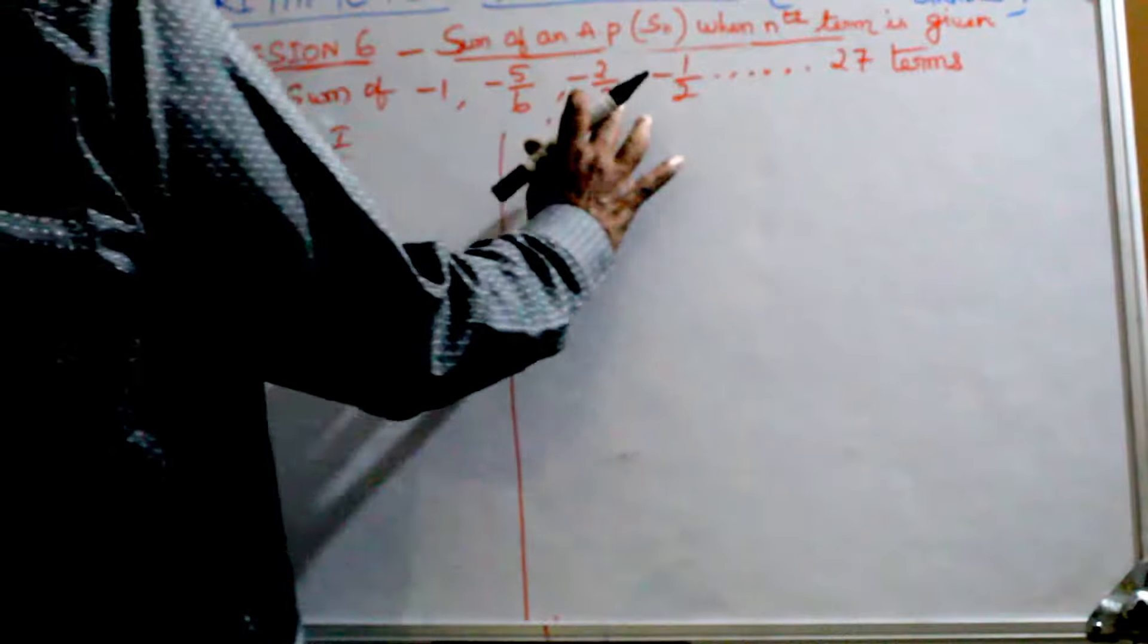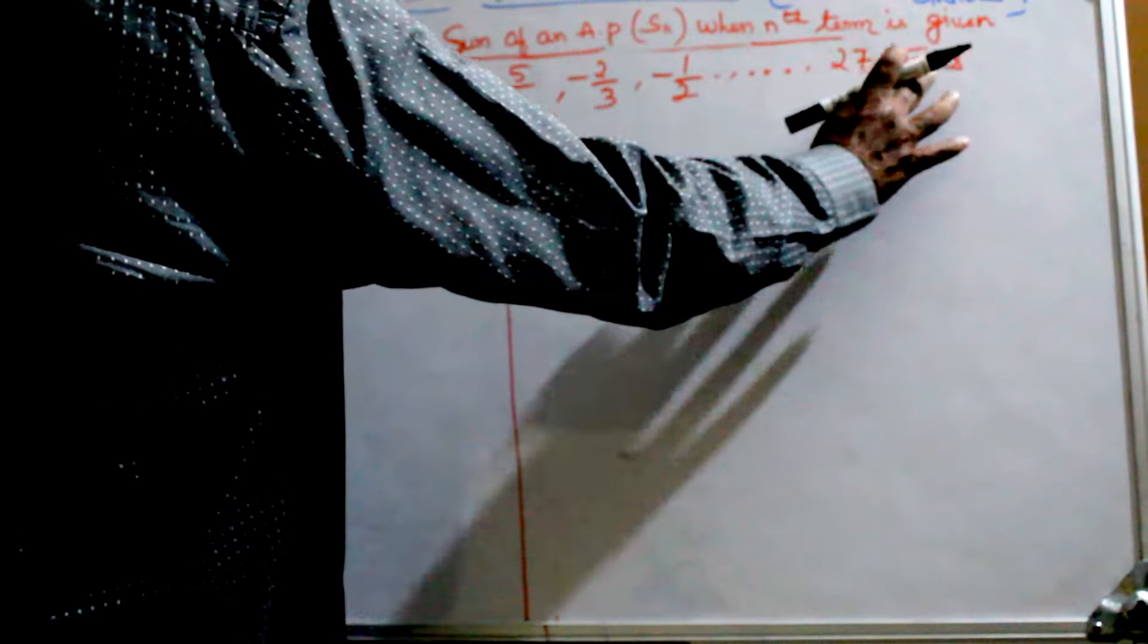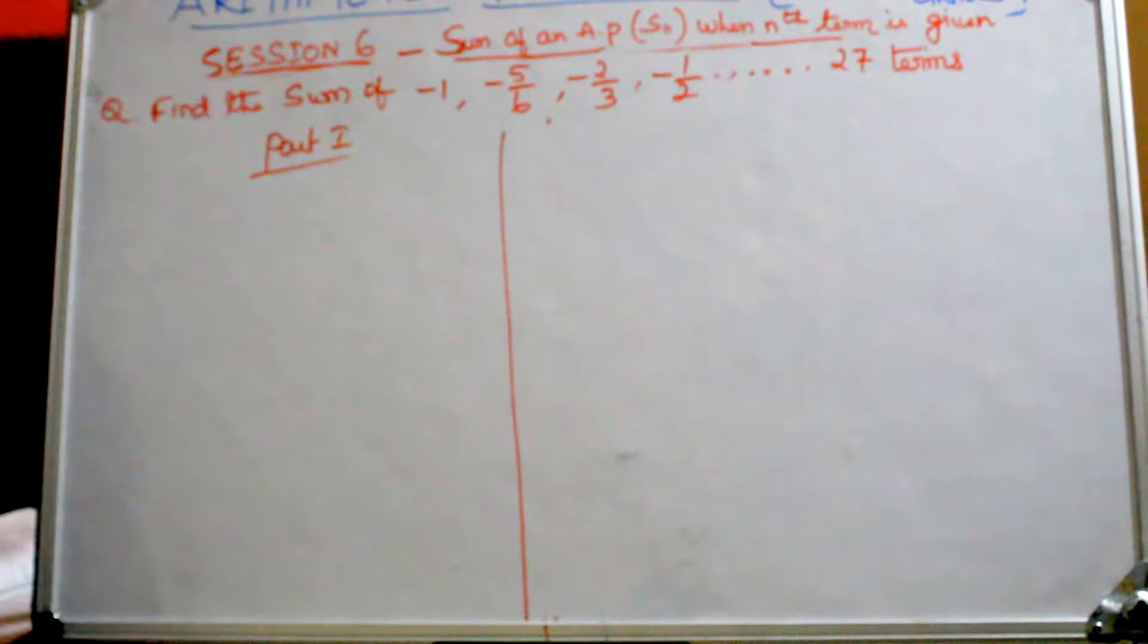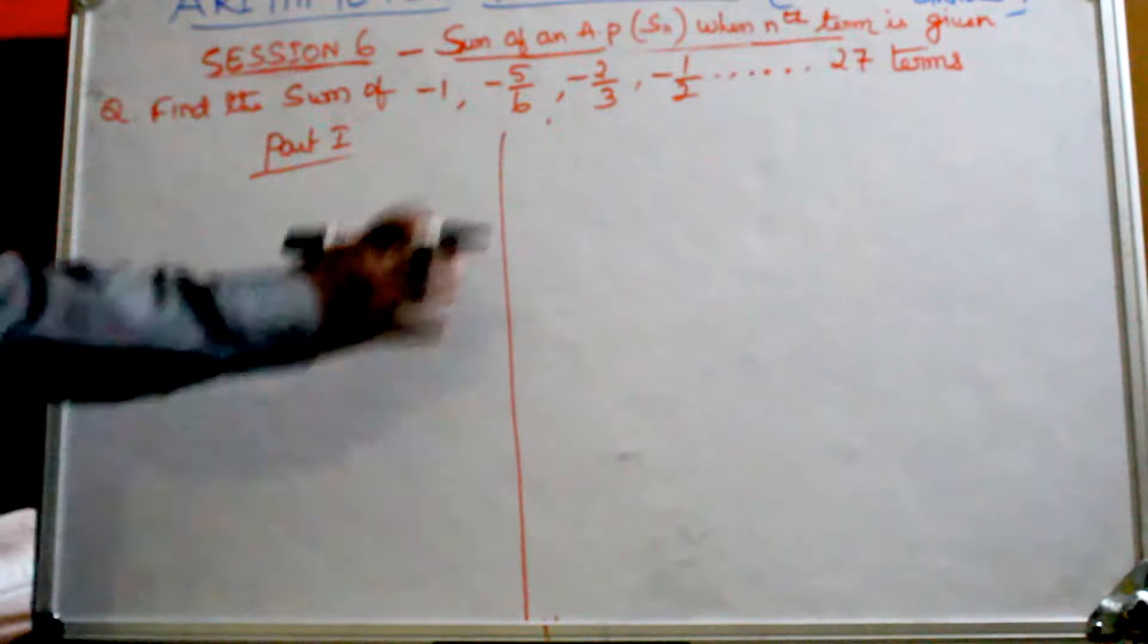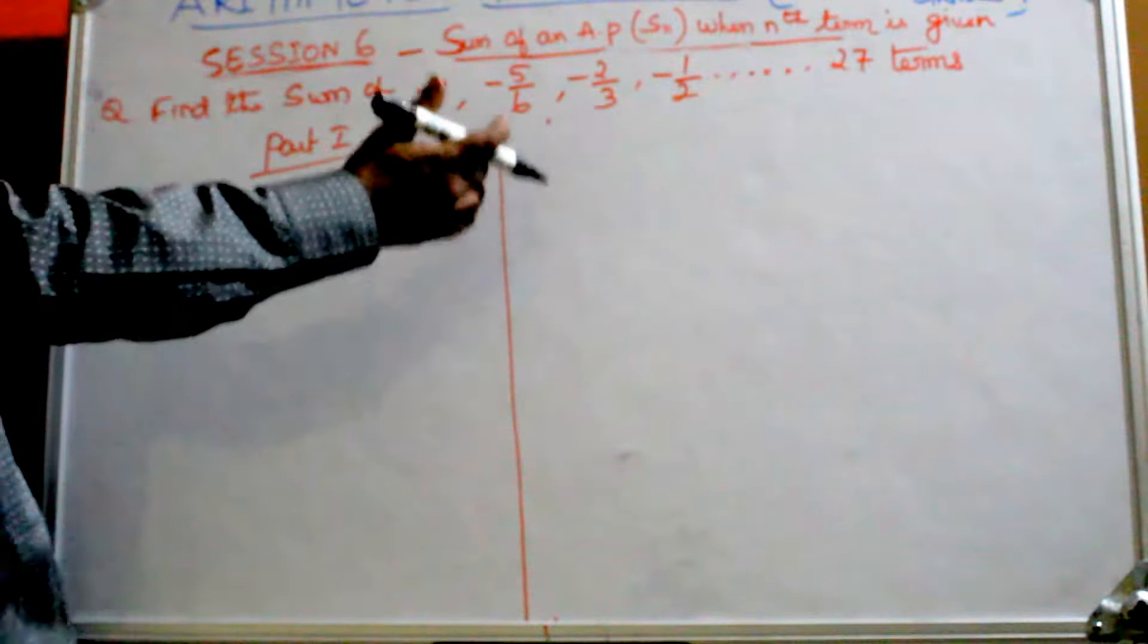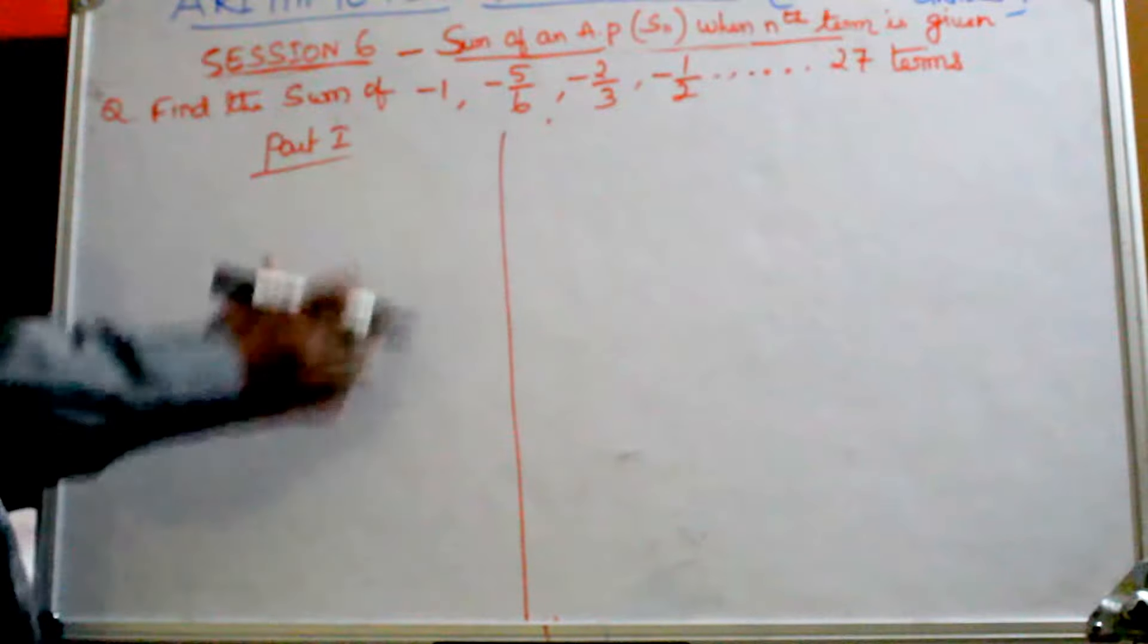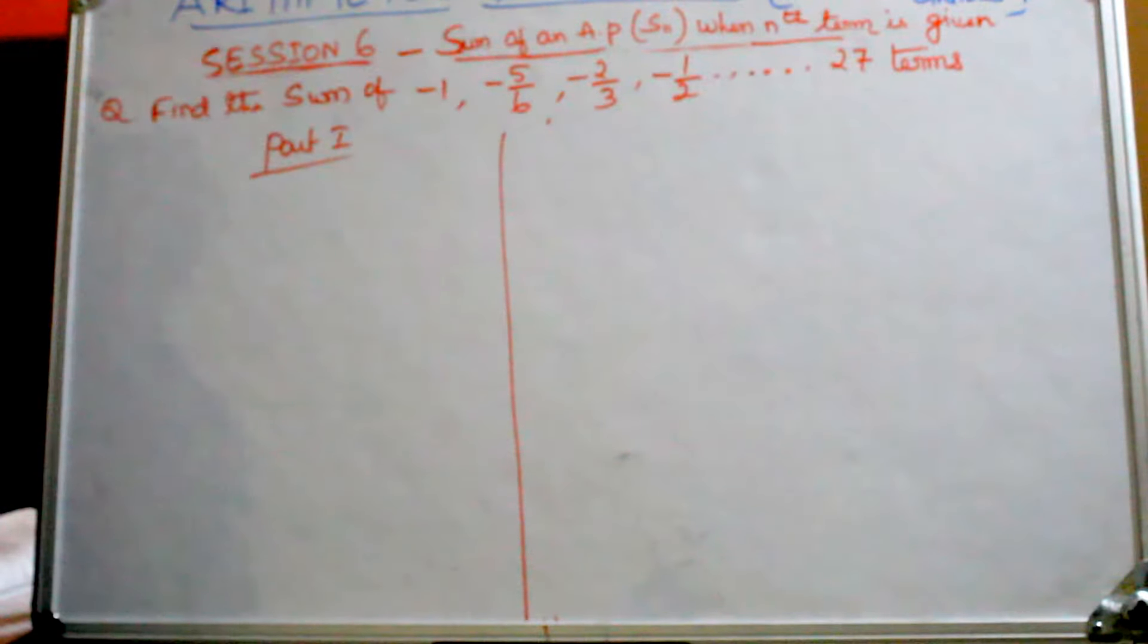Find the sum of -1, -5/6, -2/3... up to 27 terms. When these kinds of fractions come, we can do it. Just practice one by one. All the sums we did, if you practice it will become thorough. It's very simple.